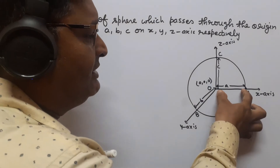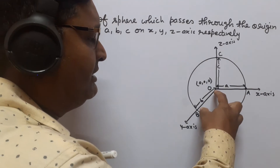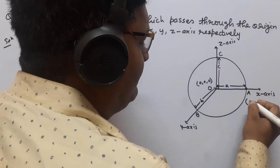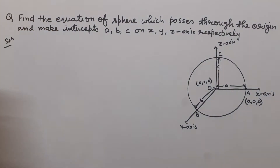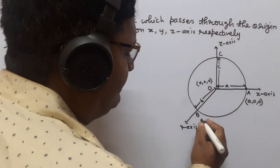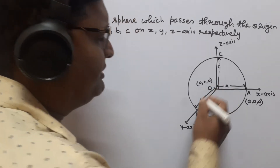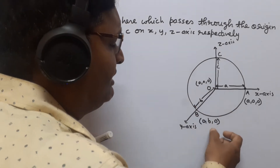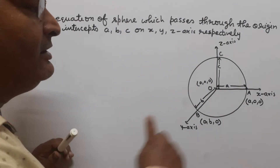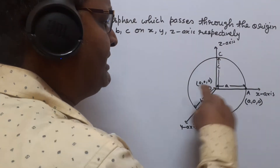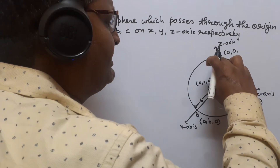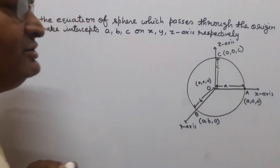It is given that the intercept on X axis is small a, the intercept on Y axis is small b, and the intercept on Z axis is small c. The coordinate of point B is (0, b, 0) because on the Y axis, the X and Z coordinates are 0. Similarly, the coordinate of point C is (0, 0, c) because on the Z axis, X and Y coordinates are 0.